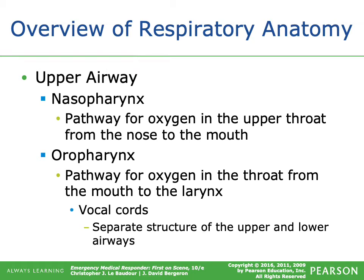The upper airway starts with the nasopharynx — this is a pathway for air, which contains about 21% oxygen, in the upper throat from the nose to the mouth. The oropharynx is the pathway for air in the throat from the mouth to the larynx.